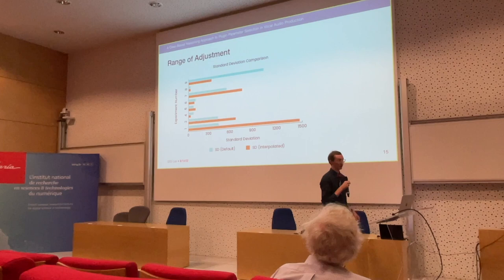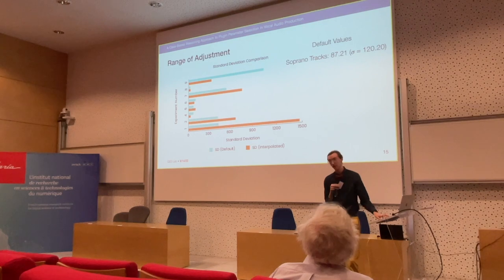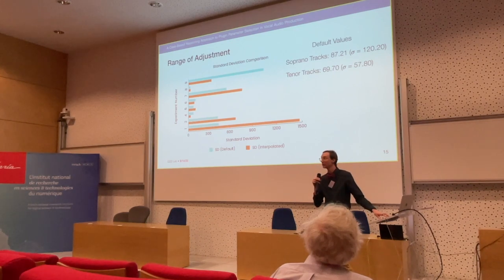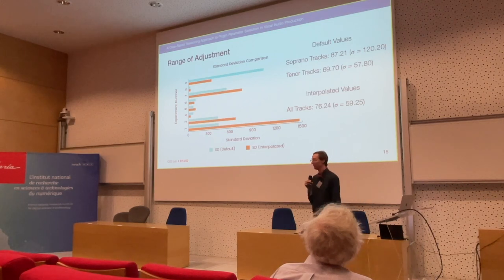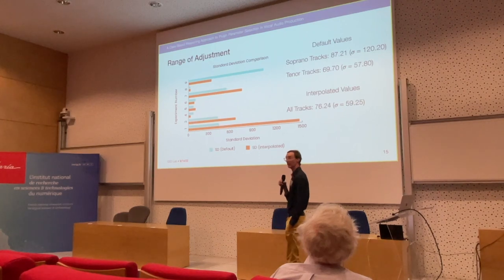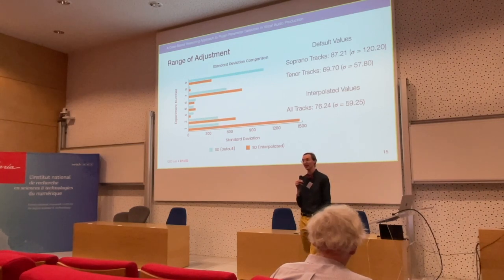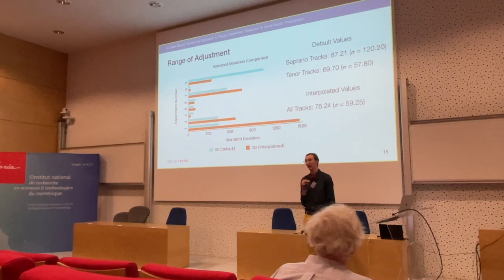We studied the range of adjustment for the 35 parameters in each trial right before the participant was satisfied with the results. We recorded an average range of adjustment of 87.21 for the soprano-leaning tracks, and 69.7 for the tenor-leaning tracks — both starting from default values. For the interpolated values, we had an average of 76.24. The results told us that although participants felt like they changed a lot more when starting from interpolated versus default values, quantitatively there really wasn't a difference — they clicked just as many times and changed parameters about the same amount on average.